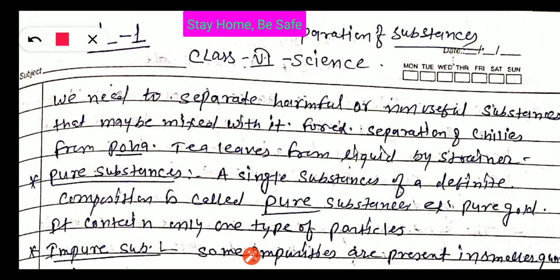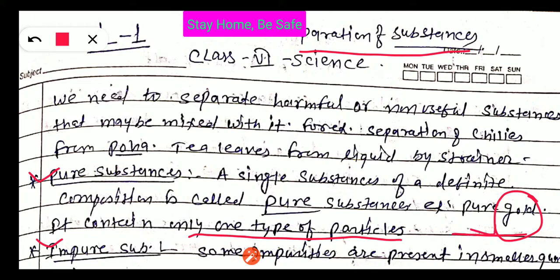The question arises here: why do we need to separate substances? Different types of substances are there. Some substances are pure substances, some are impure substances. Pure substances means the substance that is made up of only a single type of particles with a definite composition. For example, pure gold contains only particles of gold, not silver or copper.